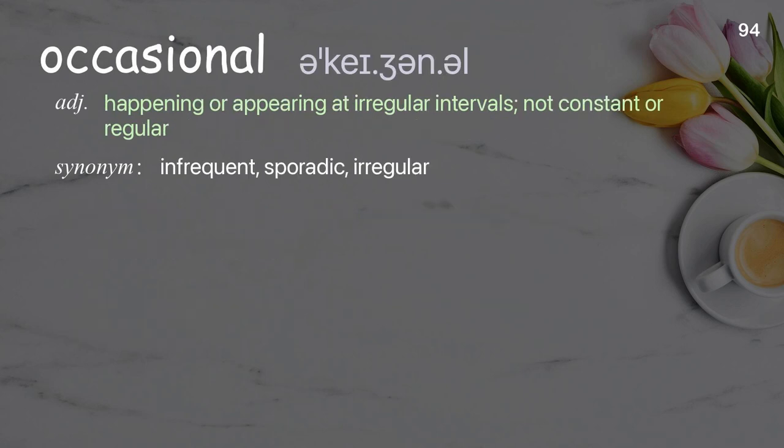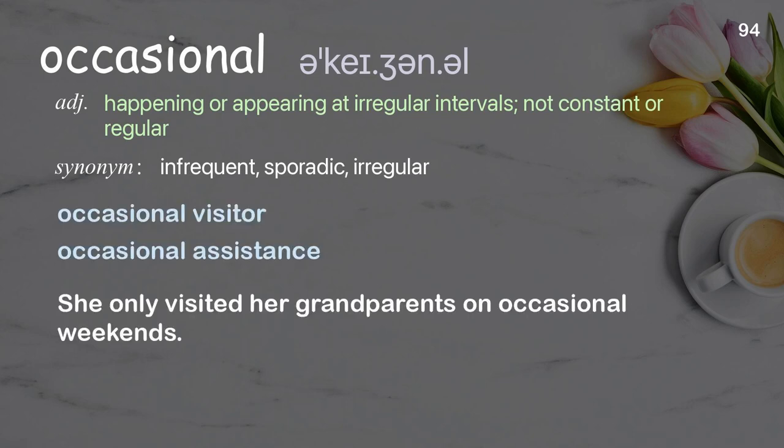Occasional. Happening or appearing at irregular intervals; not constant or regular. Examples: occasional visitor; occasional assistance. She only visited her grandparents on occasional weekends.